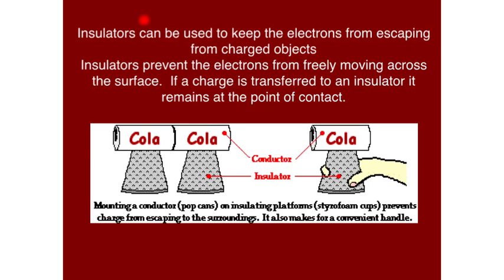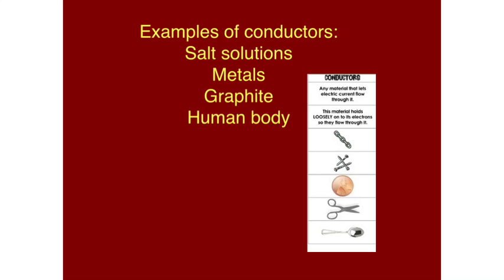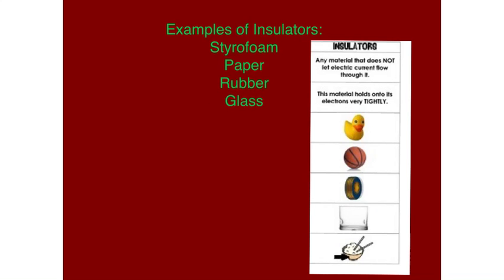Insulators can be used to keep electrons from escaping from charged objects, and they prevent electrons from freely moving across the surface. If a charge is transferred to an insulator, it remains at the point of contact. Examples of conductors include salt solutions, metals, the graphite in your pencil, and your human body — conductors let electric current flow through them and electrons evenly distribute. Examples of insulators include Styrofoam, paper, rubber, and glass — an insulator does not let electric current flow through it; the electrons stay right at the point of contact.